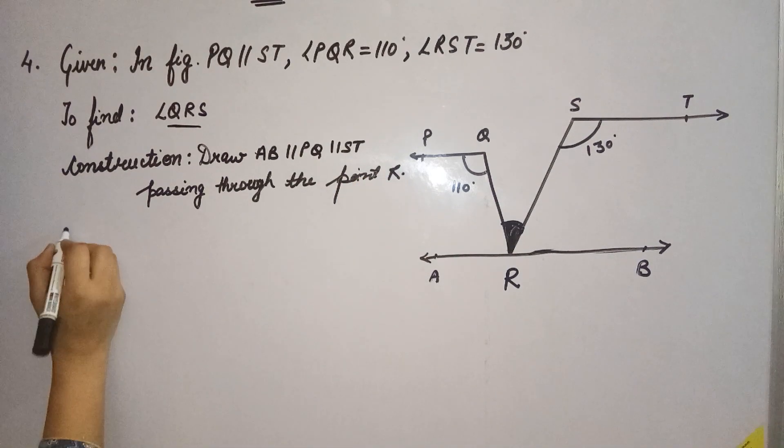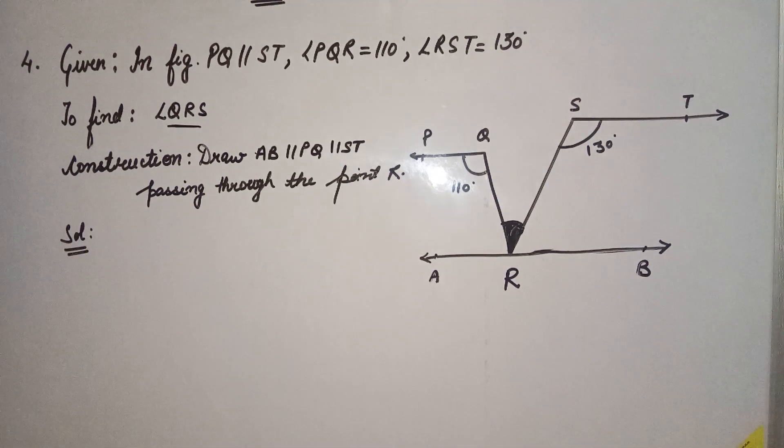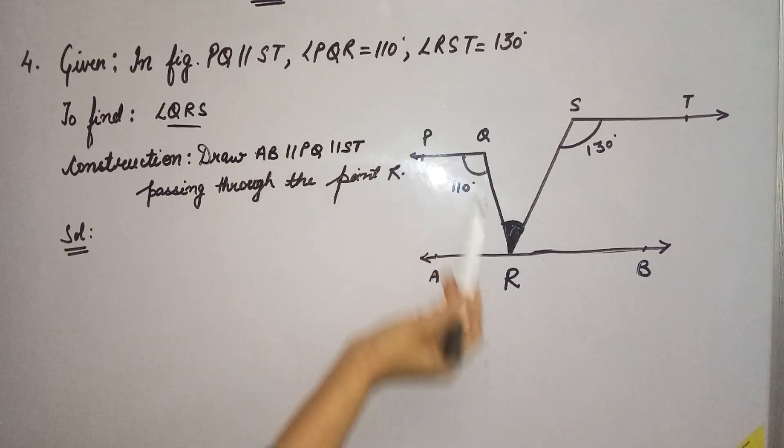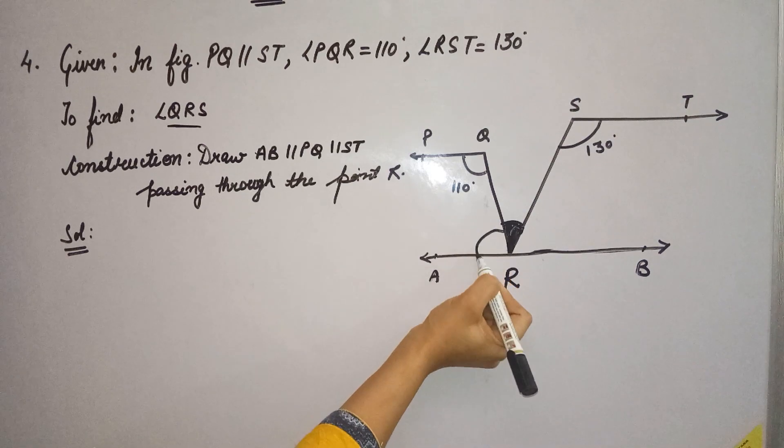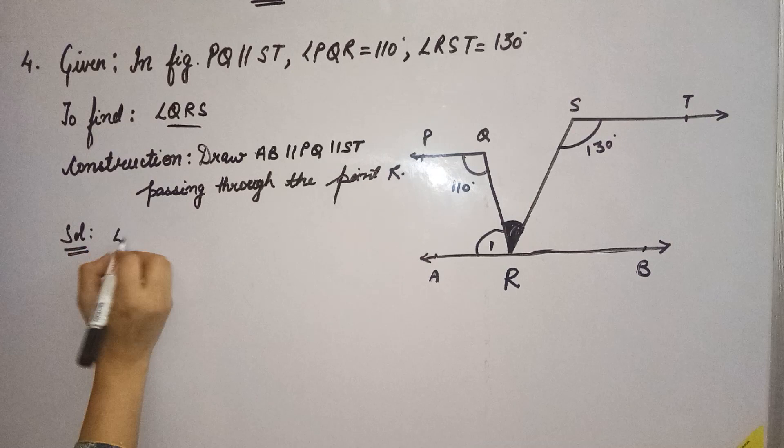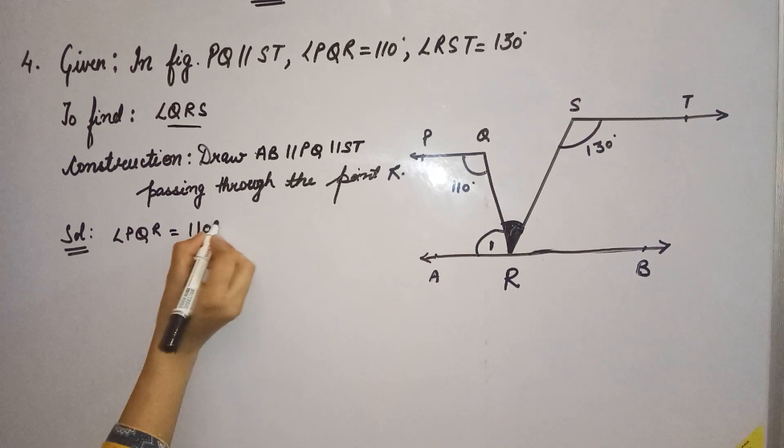So now we are going to find out the solution. Since the whole line AB is parallel to these two lines, they are making angles on the same side of the transversals. So let's call this angle 1. Angle PQR is given to us as 110 degrees.